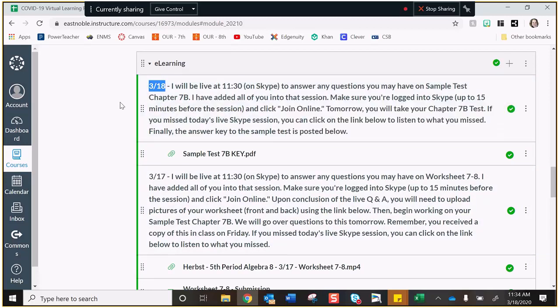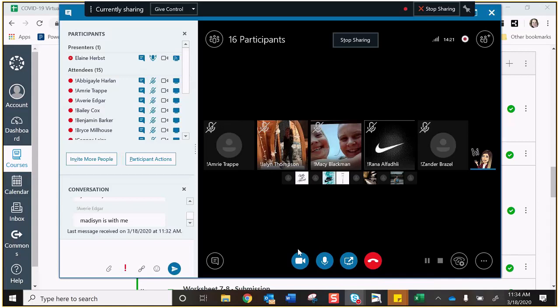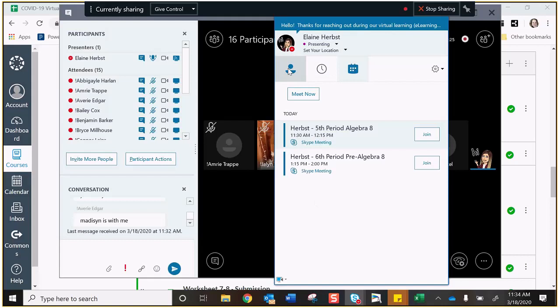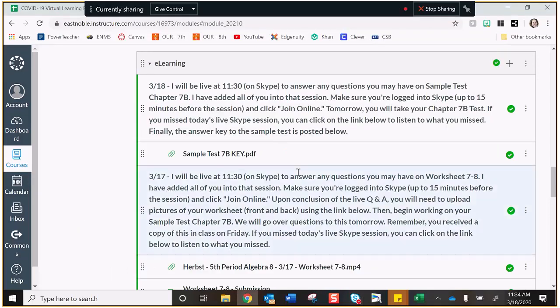Skype at 11:30. I've sent you all invitations to that. If you're having trouble with the invitations or if you dismissed all the alerts because they're annoying, you can always go to your Skype, go to your calendar, and then you can see on here today's meetings that you're supposed to join. They go in order, so you can always join that way. Your sample test key is right here.